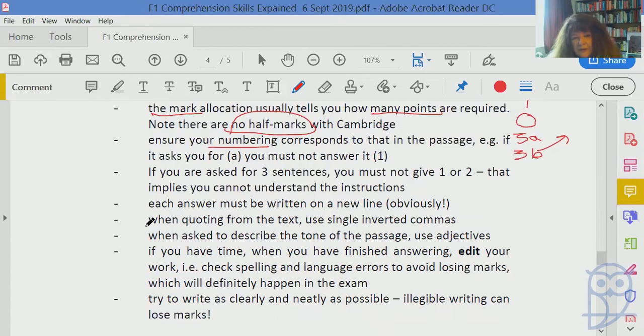When quoting from the text, maybe they ask you for a word or what quote shows how someone behaved, you should use single inverted commas - that takes less time than double inverted commas. If you're asked to describe the tone of the passage, make sure you use adjectives to describe it because adjectives describe nouns. The tone could be humorous, gloomy, sad, exciting, whatever - so use an adjective to describe it.